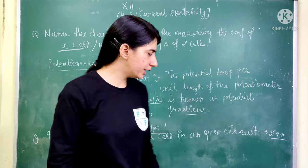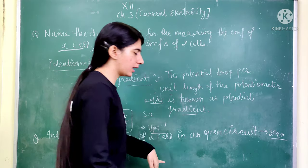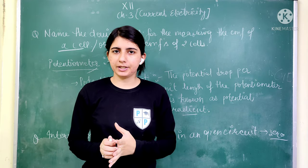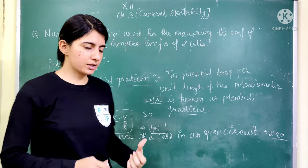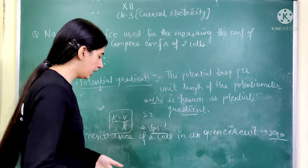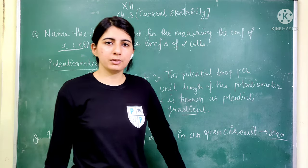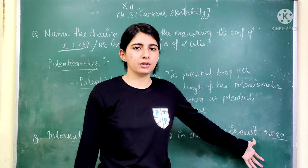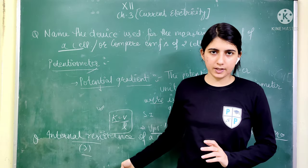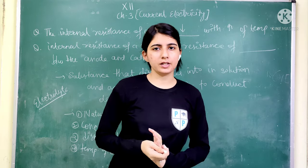The next question is about the internal resistance of a cell in an open circuit. If there is an open circuit, it means the circuit is not complete — what is the internal resistance? Internal resistance is denoted by small r. The answer is zero — internal resistance is zero in an open circuit.